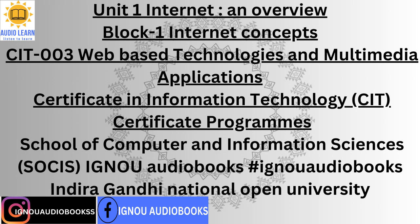1.1 Objectives. After studying this unit, you should be able to: identify how the Internet came into existence; explain different advantages and tools available through Internet; recognize different software and hardware components used to access Internet; elucidate the purpose of protocols used in Internet; recognize different types of addresses used in Internet; find different methods that can be used to connect with Internet; and set up the dial-up connection for connecting to Internet.